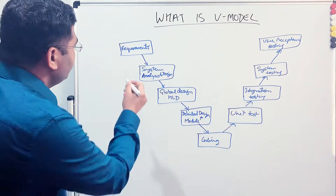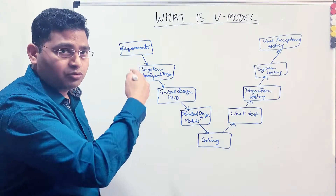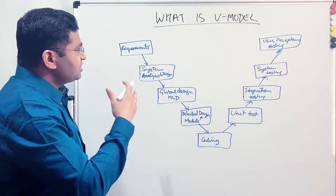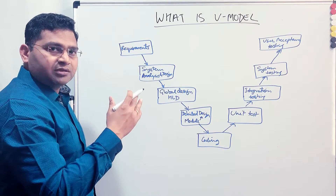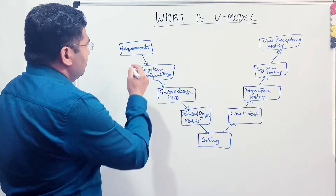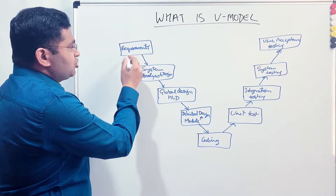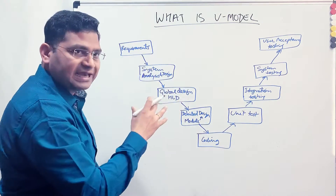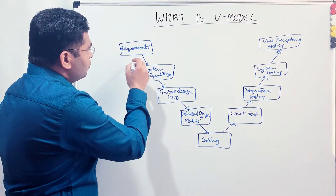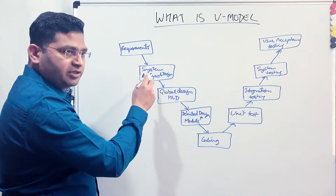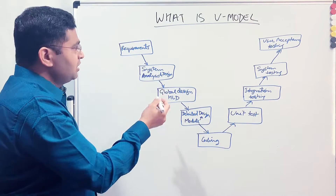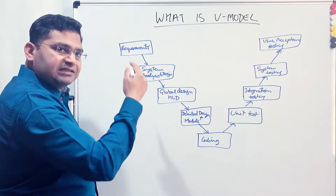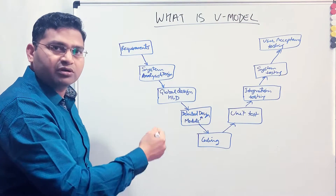The first phase of V-Model is the requirements gathering phase, which is very similar to SDLC or the waterfall approach. Requirements are the first source of truth for any software development team to start working on any coding or development activity. In the waterfall approach, there was no test involvement at that particular phase — once the requirements got frozen, only then did the development or design activity start.